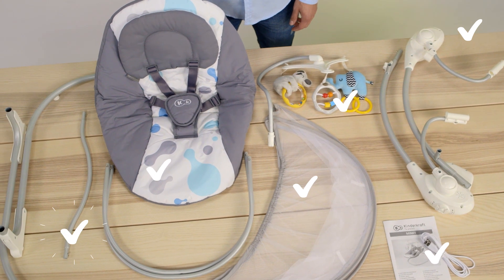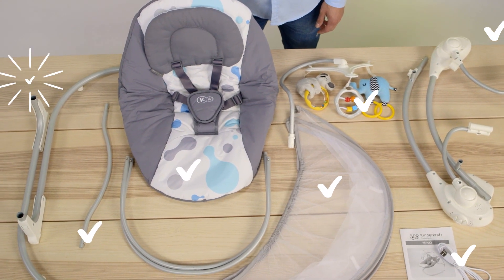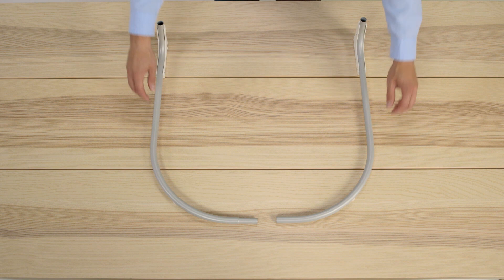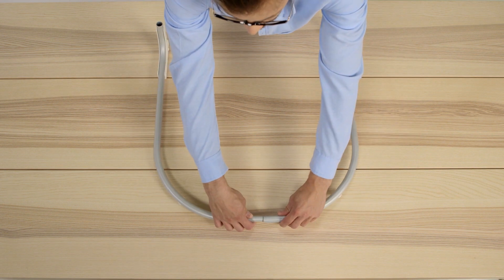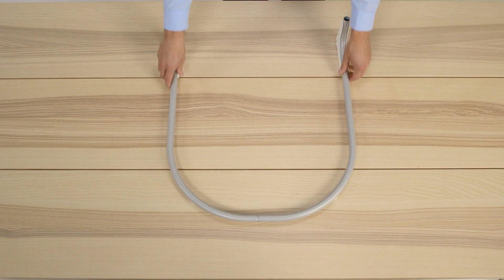Three curved tubes for the construction of the frame and two legs which form the base. Connect the two tubes forming the base with each other. Simply slide one into the other.